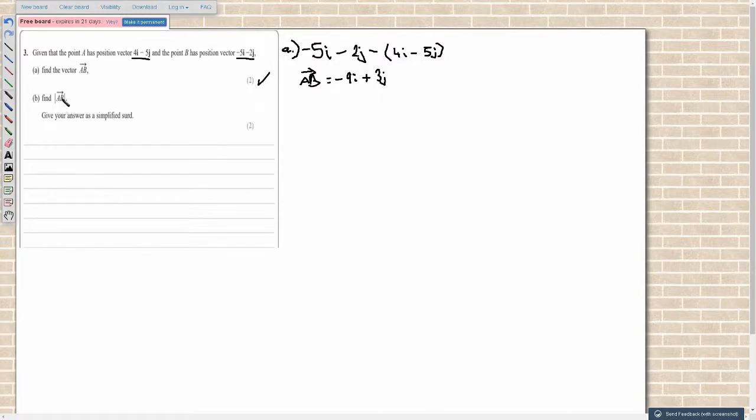And then for part B, we have to find the mod, or the absolute value of the vector AB. So all we're doing here is finding the length of this vector AB.